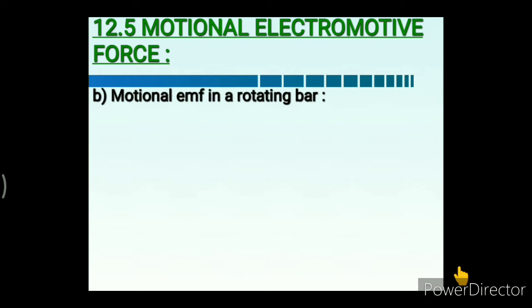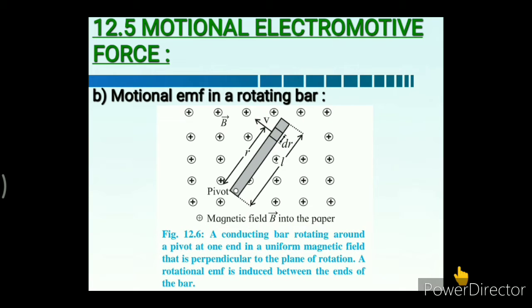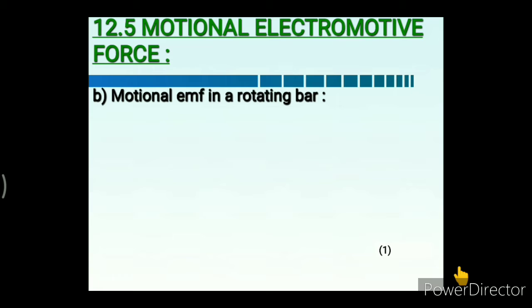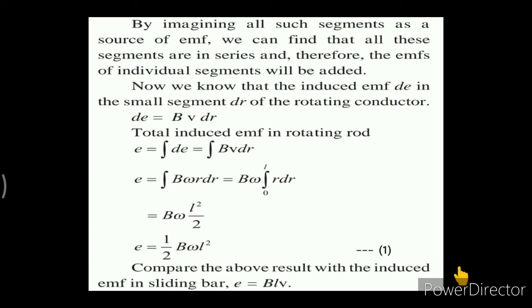We also discussed motional EMF in a rotating bar, where a conducting bar rotates around a pivot at one end in a uniform magnetic field perpendicular to the plane of rotation. The EMF induced is ½·B·ω·L², where B is the uniform magnetic field, ω is the angular velocity, and L is the length of the rod. Comparing with the sliding bar result, E = BLV, where V is the velocity.